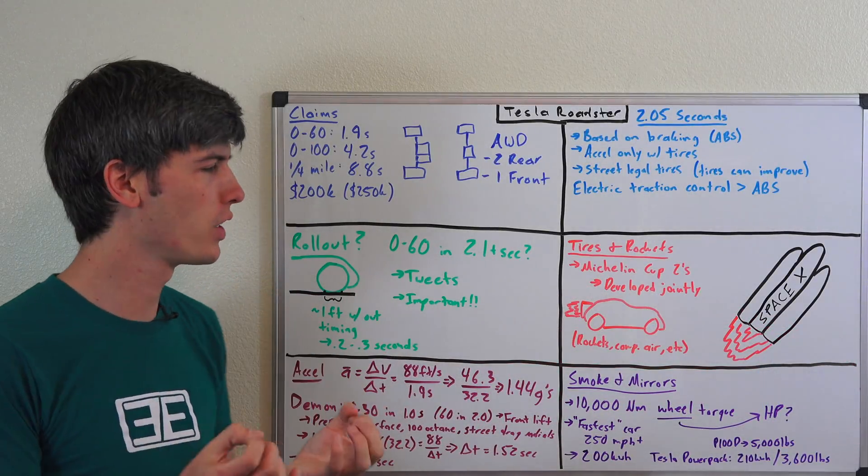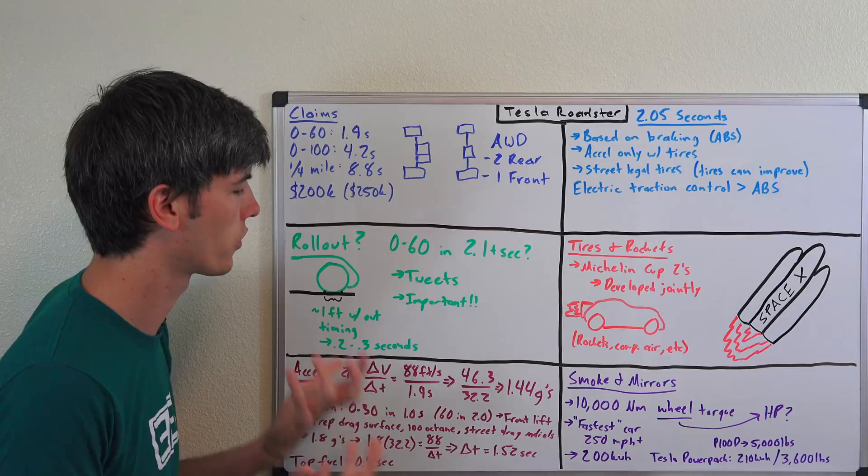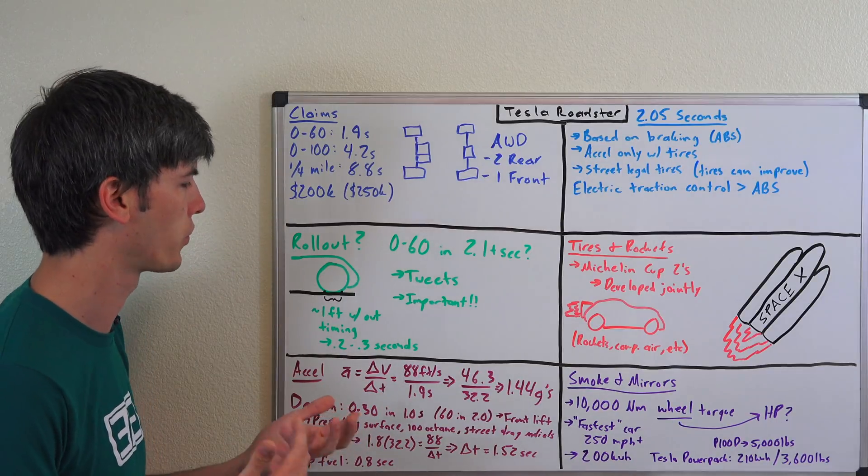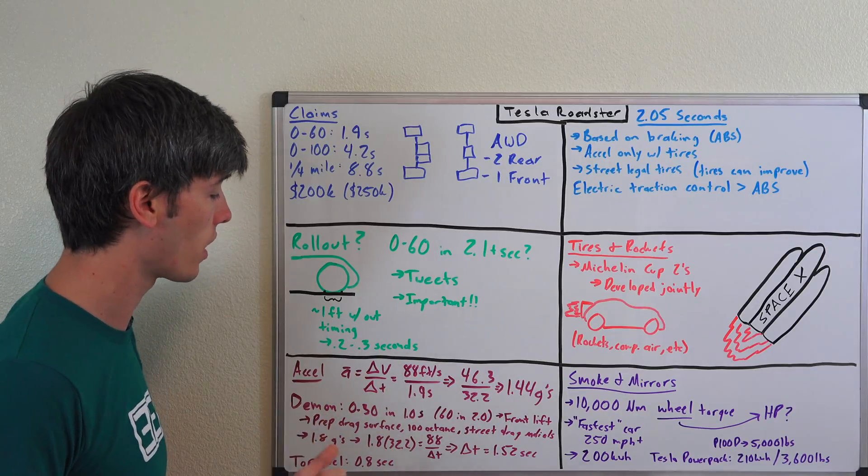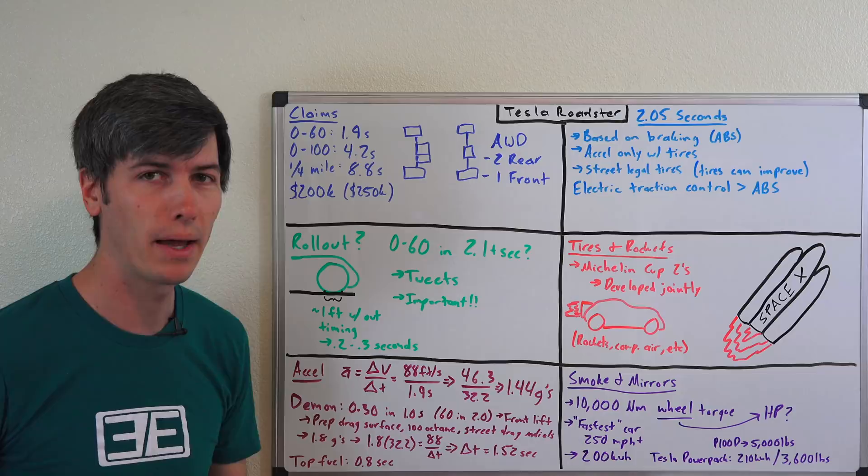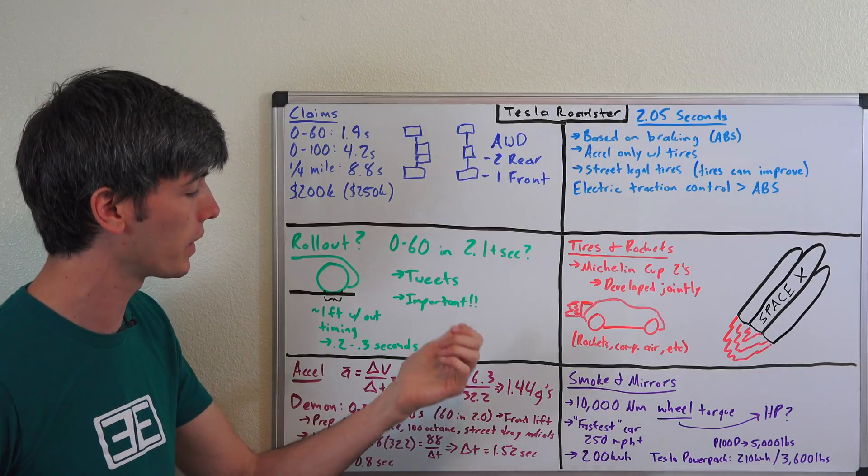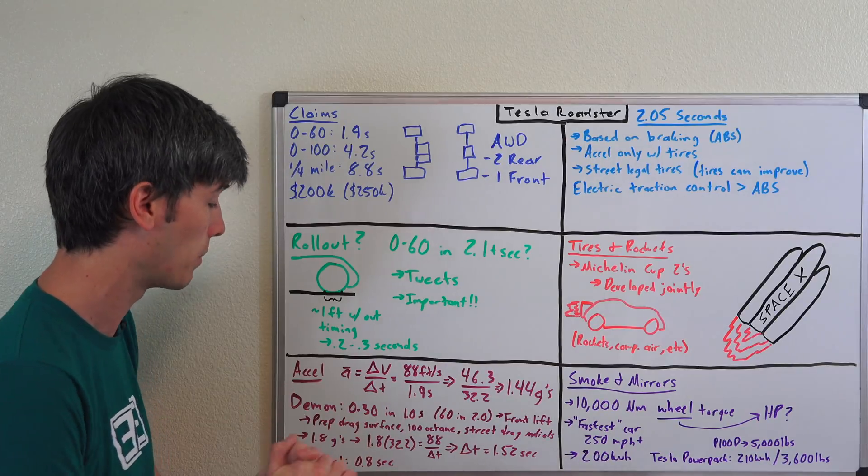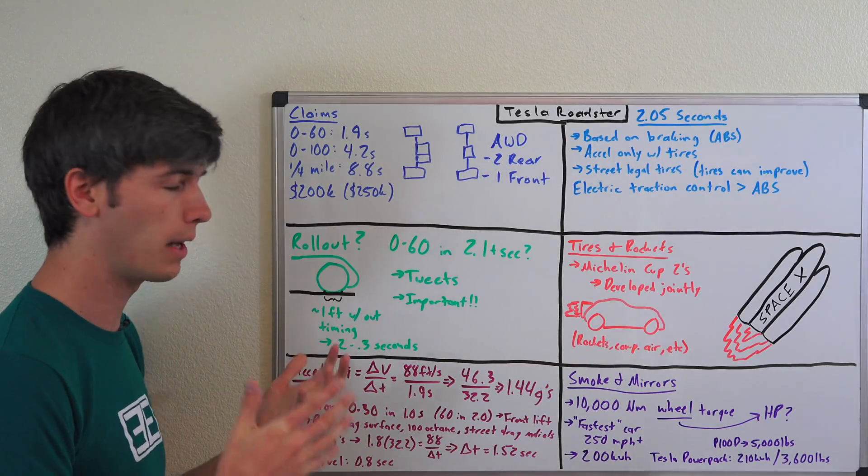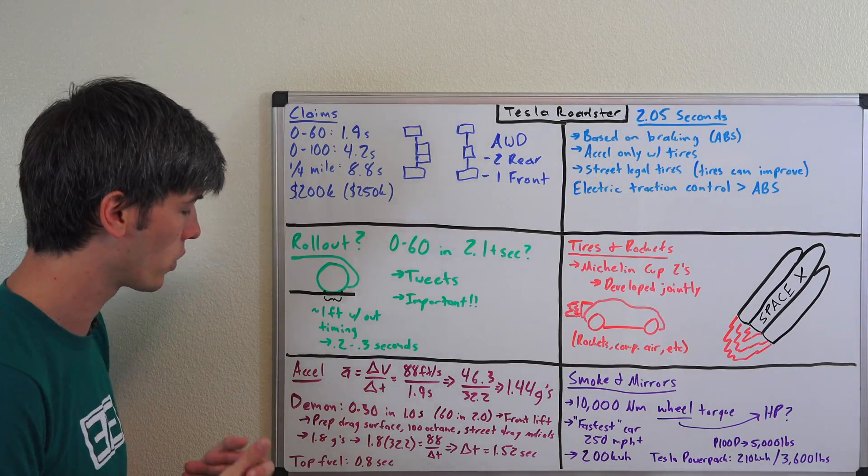Now let's take a moment and appreciate just how brutal the acceleration in this car would be if it could accelerate from 0 to 60 in 1.9 seconds. Average acceleration is equal to the change in velocity over the change in time. We do some math, we find out that it's capable of accelerating at 1.44 average G's across that 0 to 60 time. Extremely impressive.